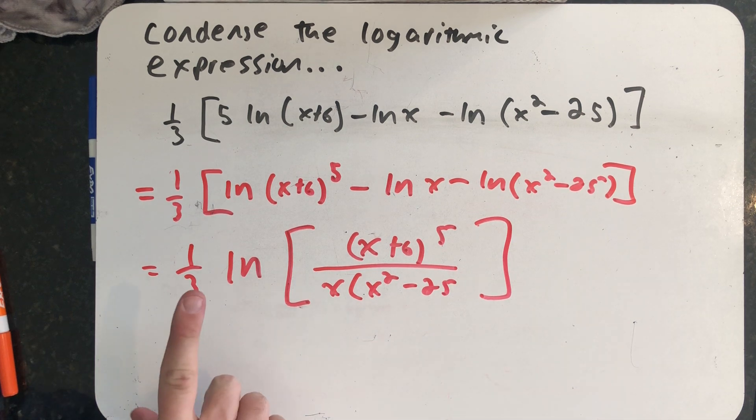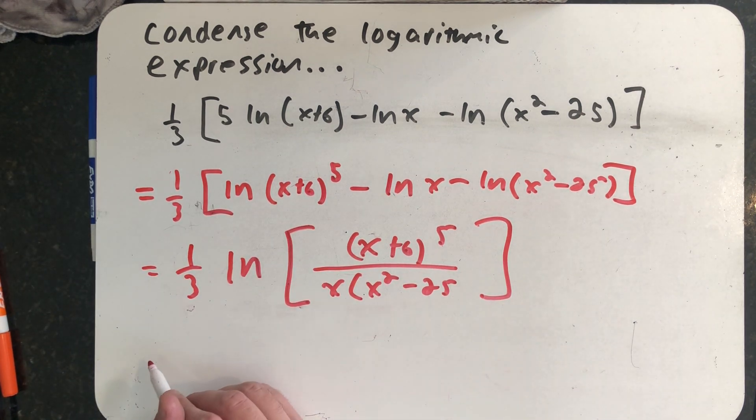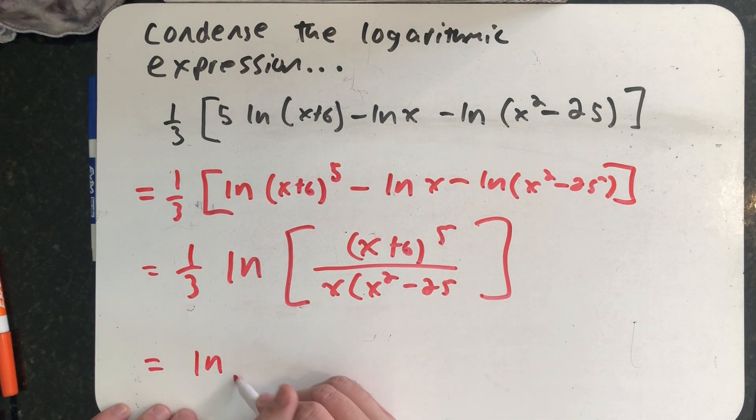And so I've rewritten this as a single log, but I don't have that one out front yet. So I need to move the one third to the inside as either a power or, as I'm going to write it, a cube root.